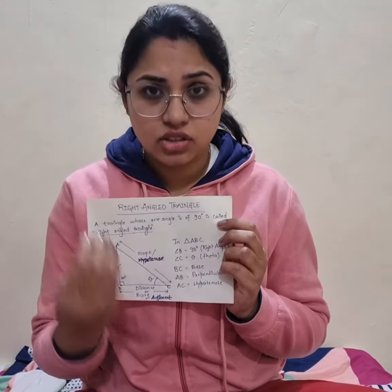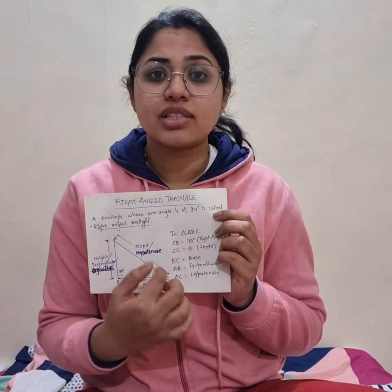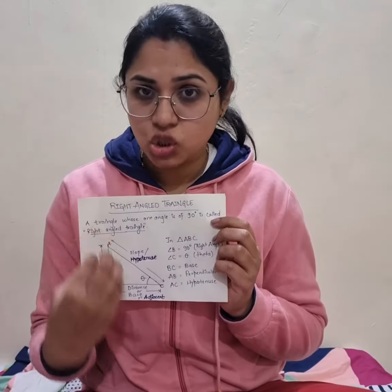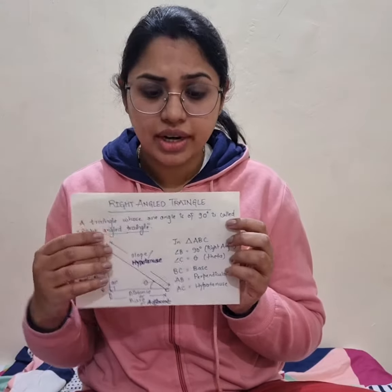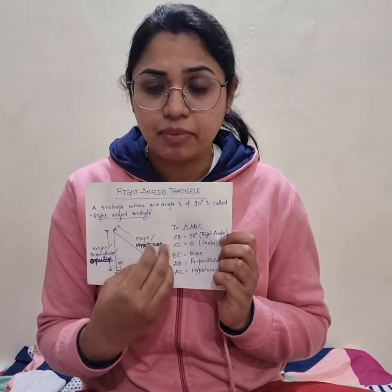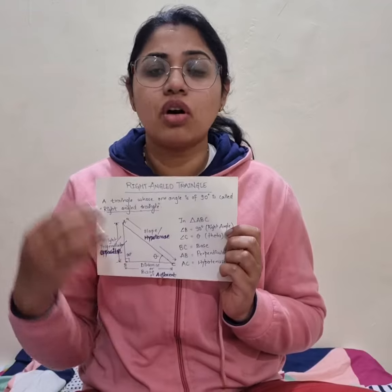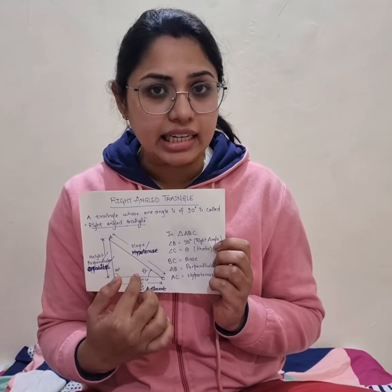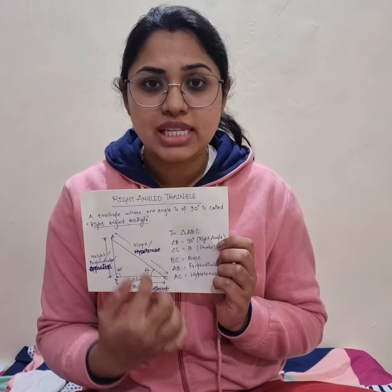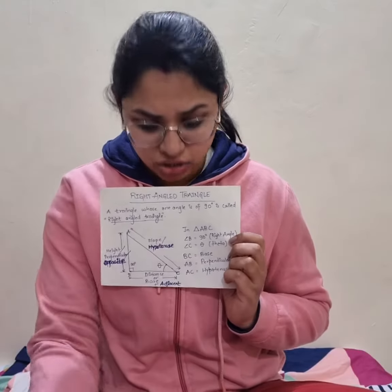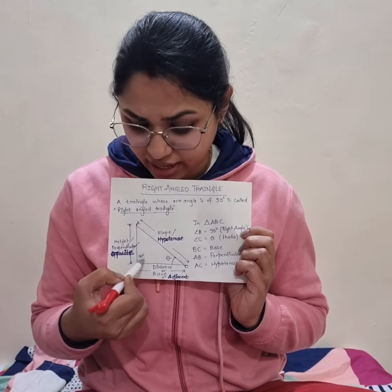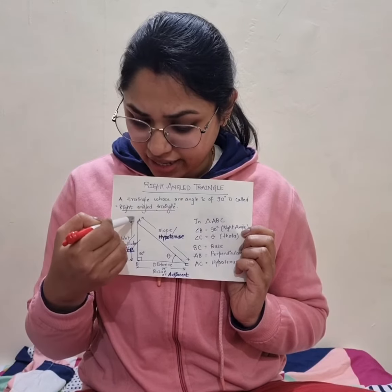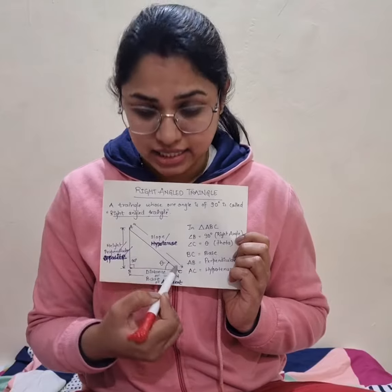In order to start the trigonometric relationships, you need to understand what these sides are termed in this trigonometry chapter. Let us take a right angle triangle ABC, which is right angled at angle B. You can see that angle B is a right angle — it is at 90 degrees. This right angle triangle has sides AB, BC, and AC.